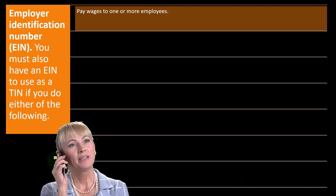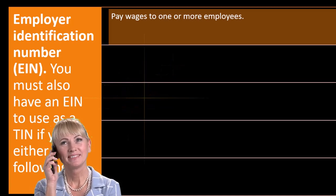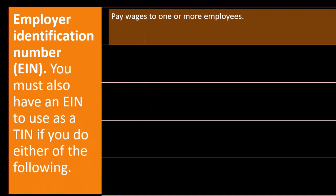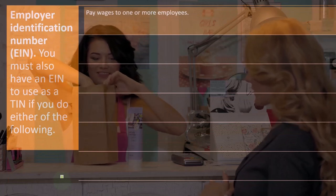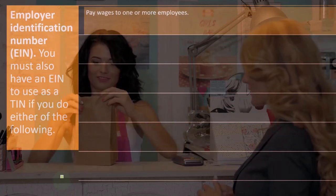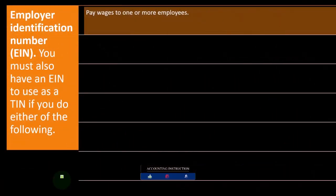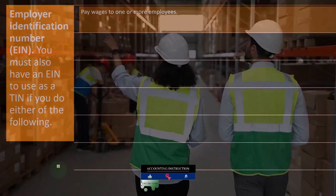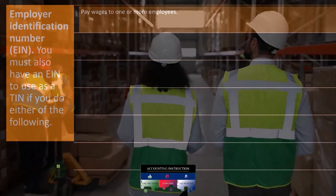Employer identification number, EIN. You have your individual identification number to file as an individual for Form 1040. You may be able to use that same number to process your Schedule C as a sole proprietor, but you might also want an EIN. You must have an EIN if you have employees, because you're going to have to deal with payroll tax returns, and to file those payroll tax returns you need an EIN.